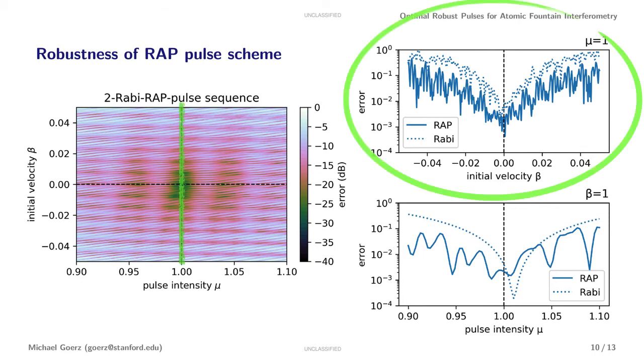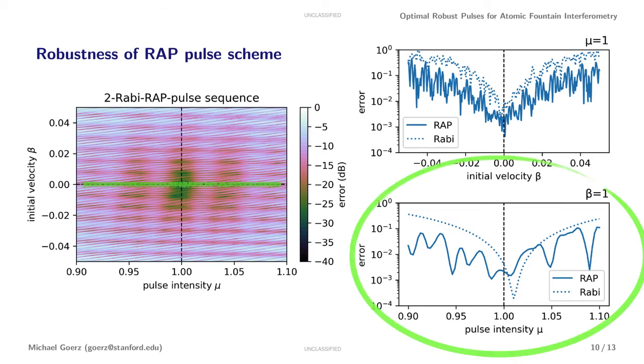When varying beta, we still have rapid oscillations in the error, although at an overall much smaller level. And when varying the pulse amplitude, we don't necessarily reach the minimum error of 10 to the minus 4, but nonetheless the error is significantly flatter.